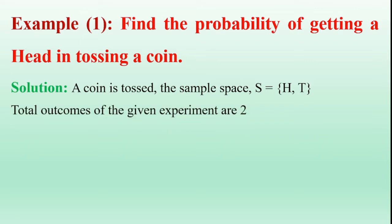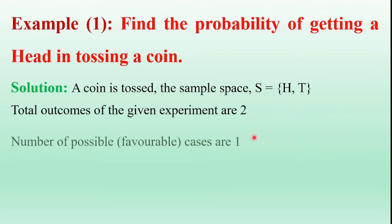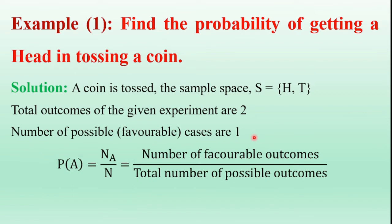Now here we can determine the probability of getting a head. When a single coin is tossed, only one head is possible. So the favorable outcomes are one. We know that the mathematical expression of probability is: number of favorable outcomes divided by total number of possible outcomes.